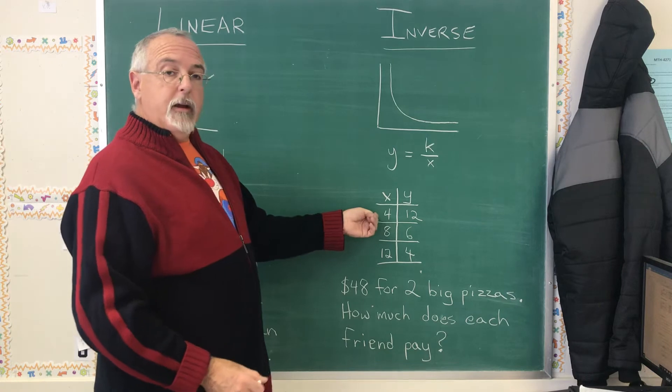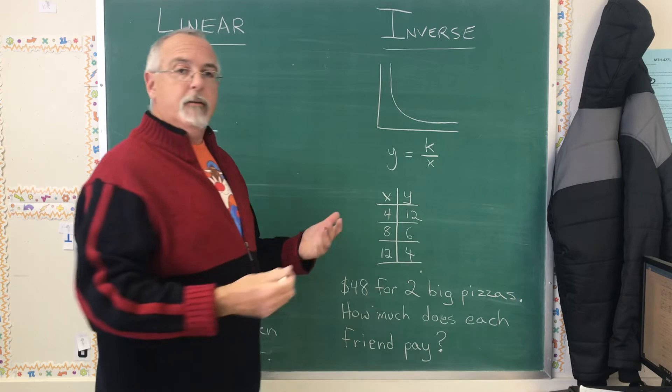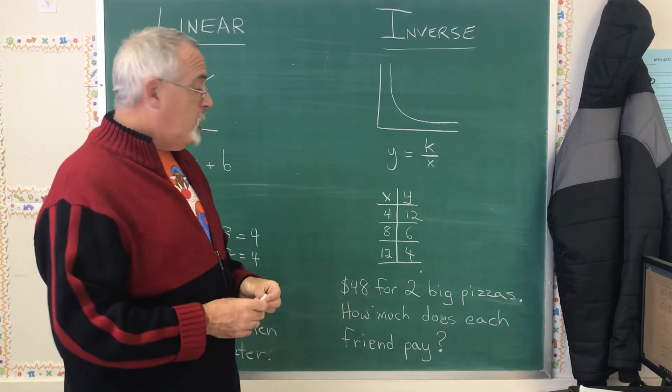If I try to do that here, it's not going to work. 6 minus 12 is negative 6. 4 minus 6 is negative 2. It's not a constant answer. So I try my next trick, which is called constant product.